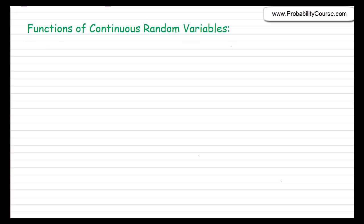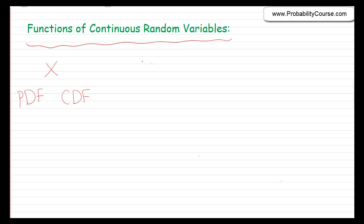In this video, we talk about functions of continuous random variables. Here is a scenario: I have a random variable x, and I know the distribution of x — for example, I know the probability density function, or I might know the cumulative distribution function of x. And I have another random variable y, which is a function of my random variable x, so y is equal to g of x.